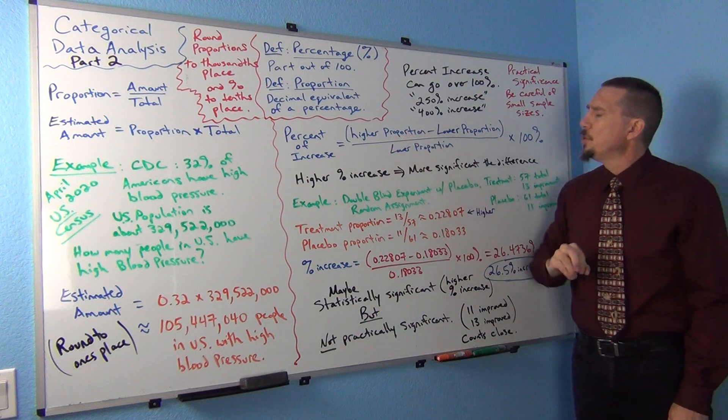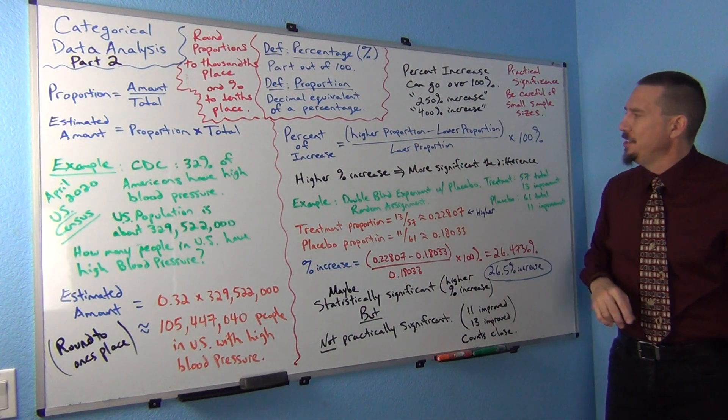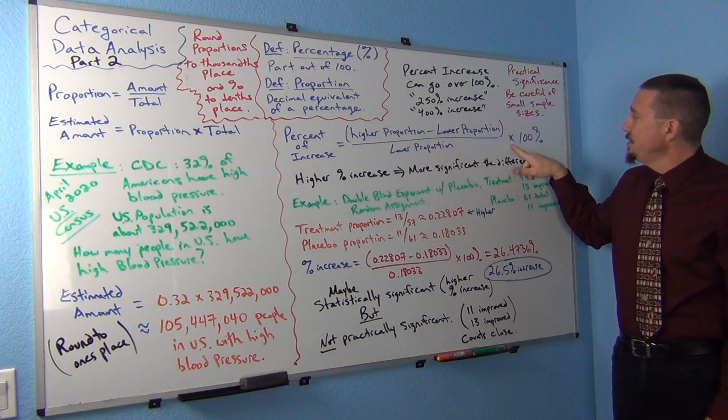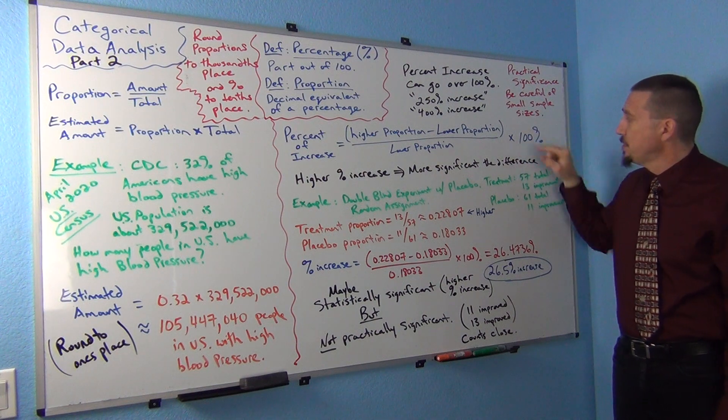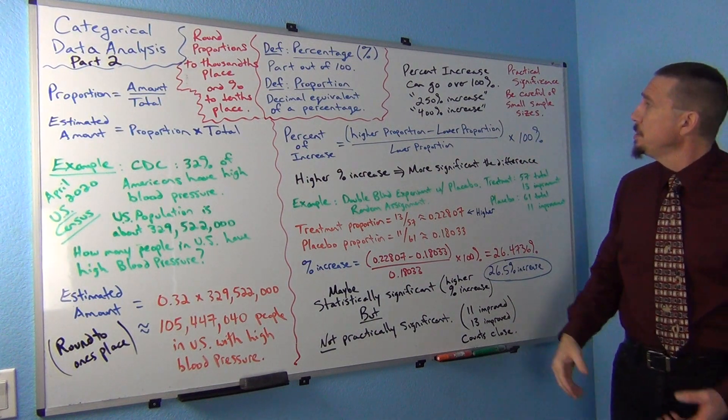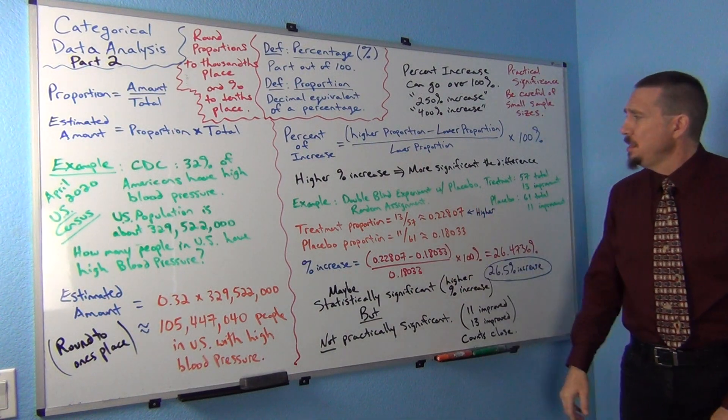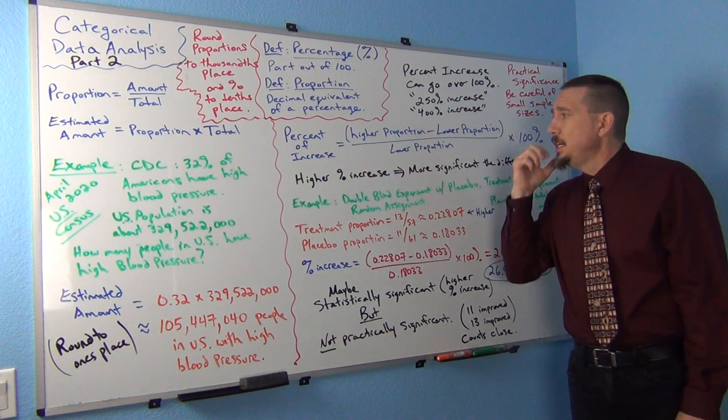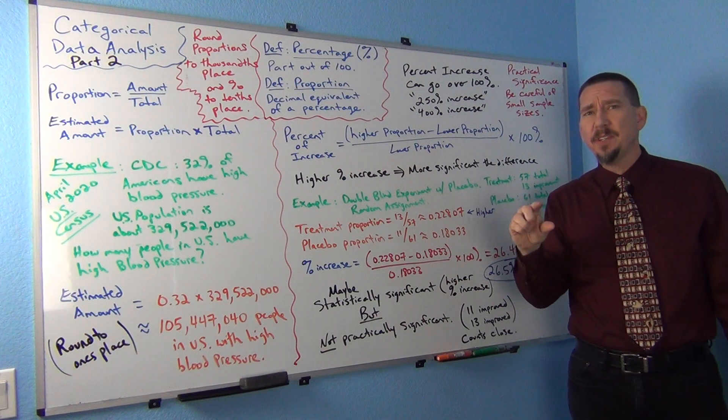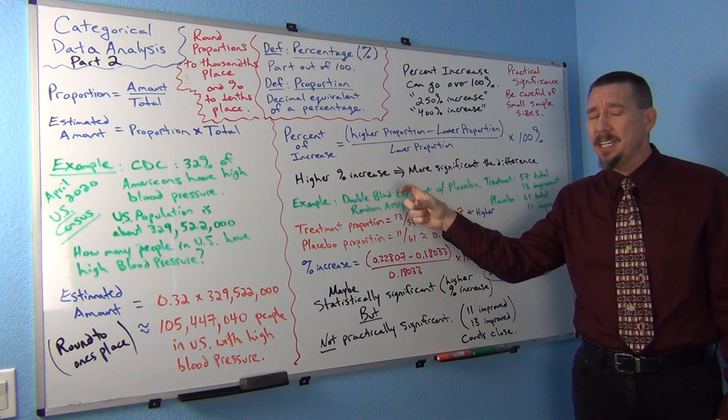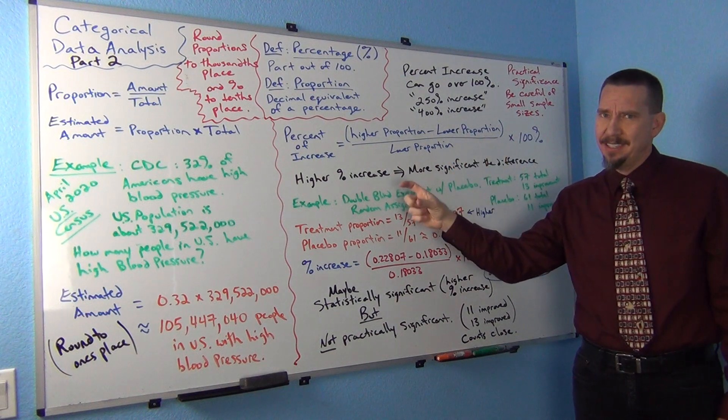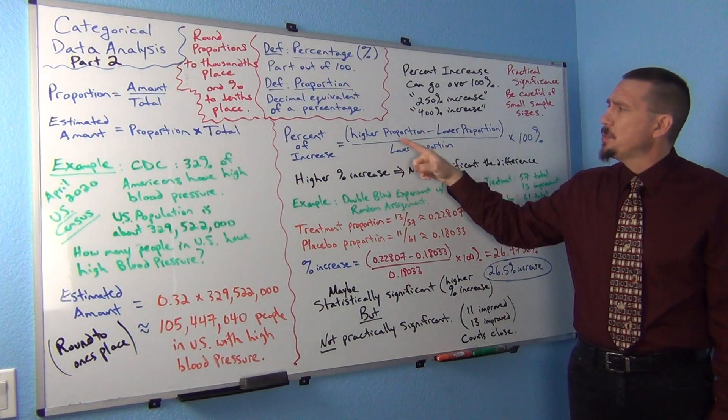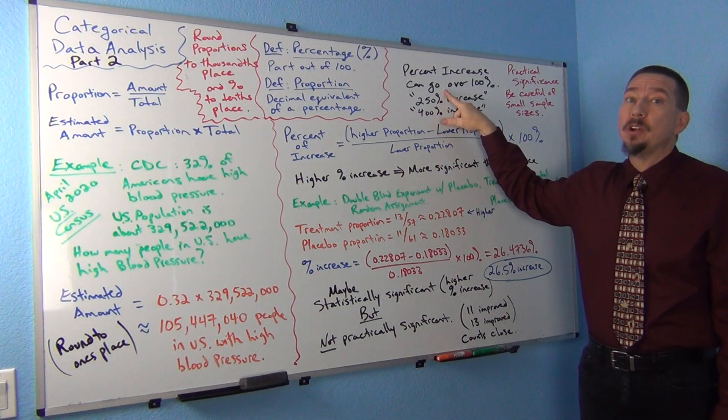So here's the formula. You take the higher proportion minus the lower proportion and then divide by the lower proportion. Now that will actually be a proportion. So what you're going to do now is you're going to multiply the answer by 100 and stick on the percent sign to turn it into a percentage. So we sometimes call this a percent of increase. The main idea is the higher this percent of increase gets, the more significant the difference. Though you do have to be careful because there is a difference between saying something is statistically significant versus practical significance. So we'll kind of talk a little bit about that in the example here.